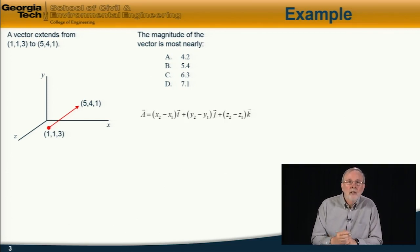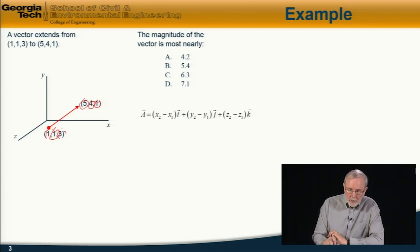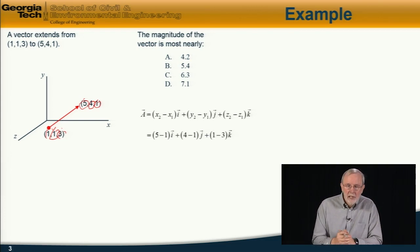So first we form the vector between those two points. And the vector is formed very simply by taking the difference between the components of the second vector and the first one. So the x component is just 5 minus 1. The y component will be 4 minus 1. And the z component 1 minus 3. This equation here. So there's the equation and expanding that out we find that that is equal to 4i plus 3j minus 2k.